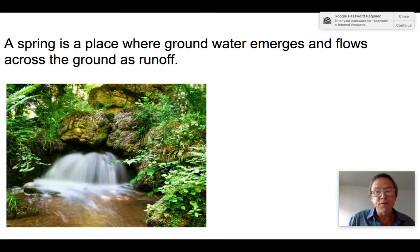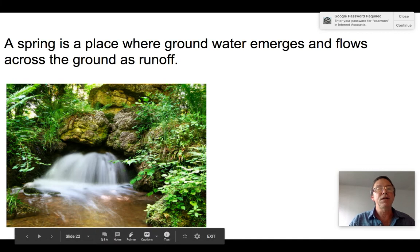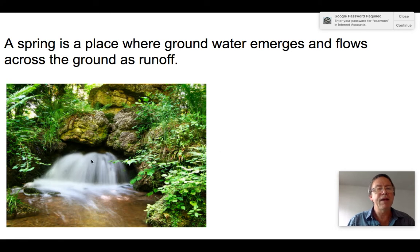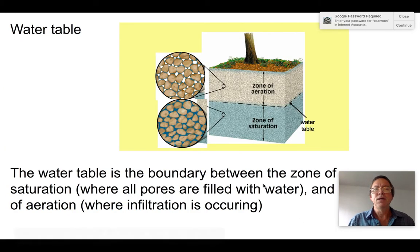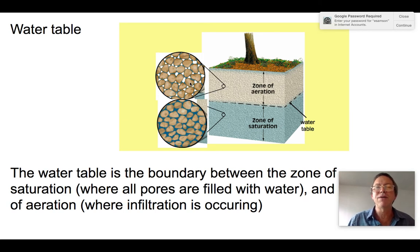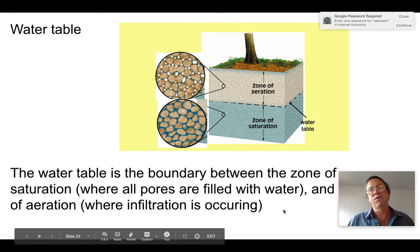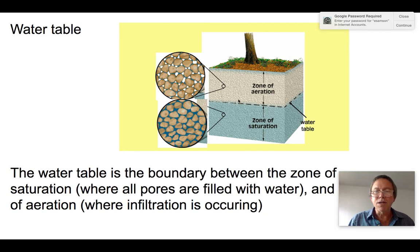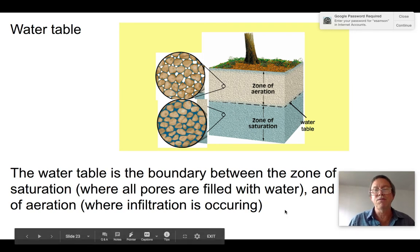If you follow a stream uphill, it will come to what's called a spring — a place where groundwater comes out of the Earth, technically where the water table reaches the surface, at which point it becomes runoff and flows through a stream. In the zone of aeration, both water and air are in the pores and water moves downward due to gravity. Below the water table in the zone of saturation, pores are completely filled with water, and water moves sideways — eventually coming out of a spring.